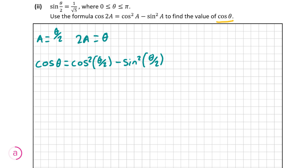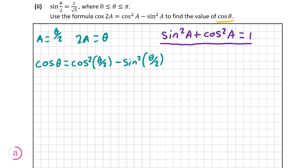Before going further, I want to recall a very important trigonometric identity: sine squared a plus cosine squared of a equals 1. This always comes in handy for trigonometric questions. I want to rearrange our equation to involve this identity, so I'm going to add and then subtract sine squared theta over 2 from the right hand side.